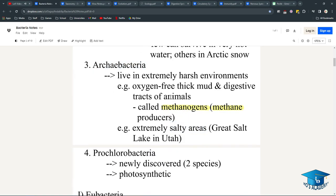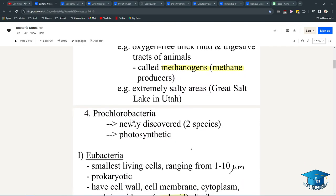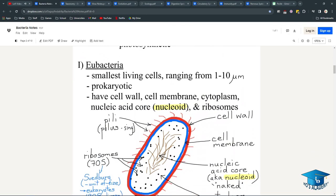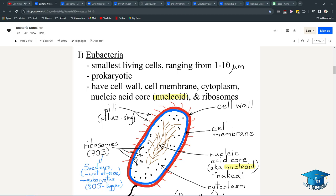Prochlorobacteria are newly discovered and all we know is that they're photosynthetic. There's only two species of them. Eubacteria are the smallest living cells, ranging from one to ten micrometers, which is really, really small.